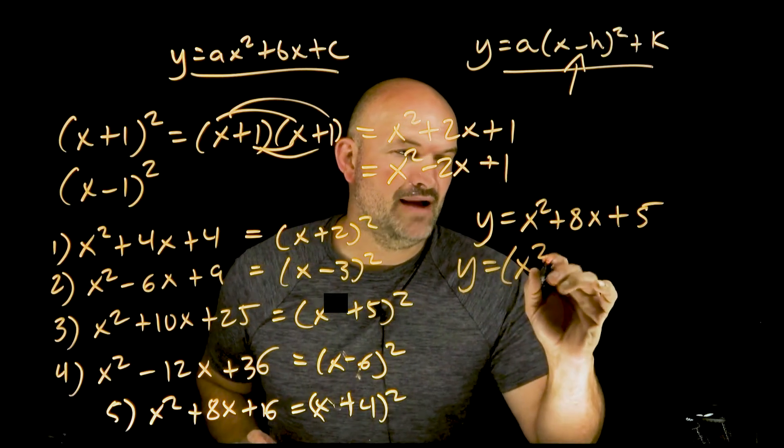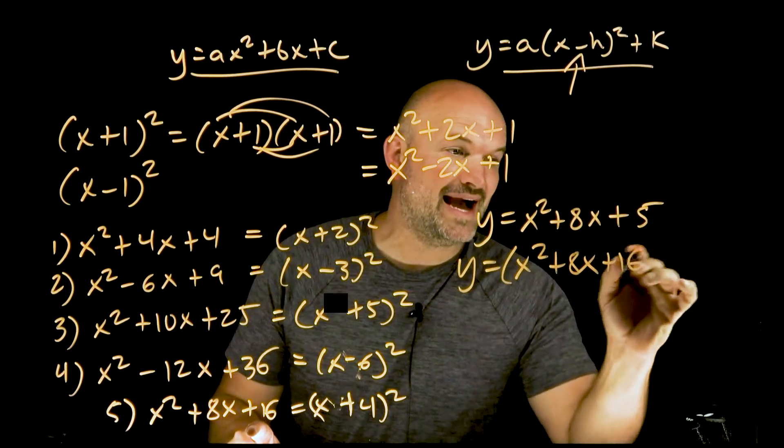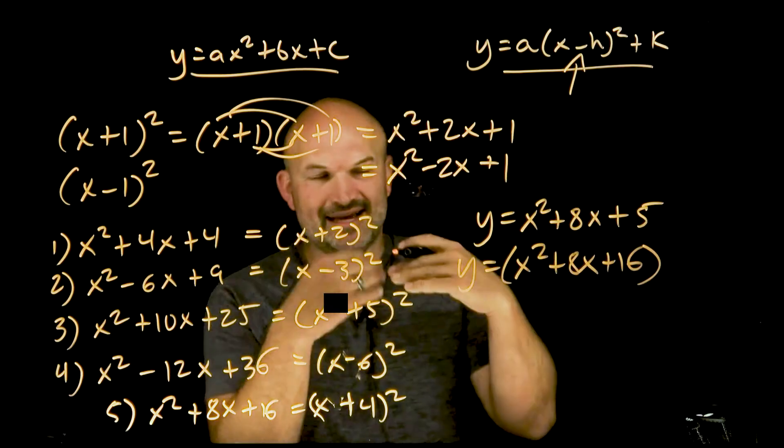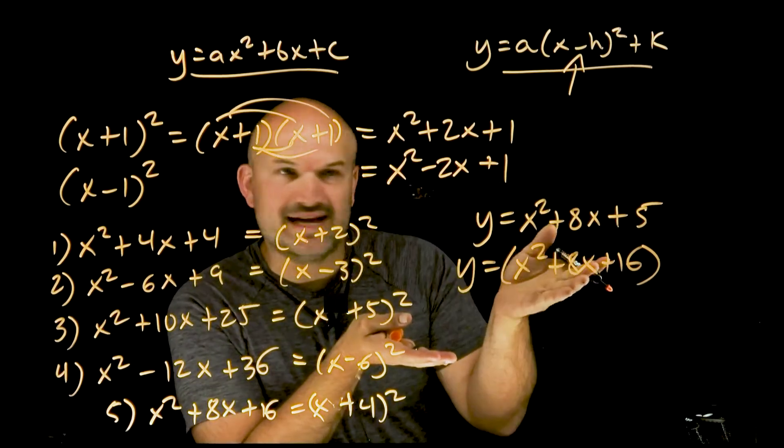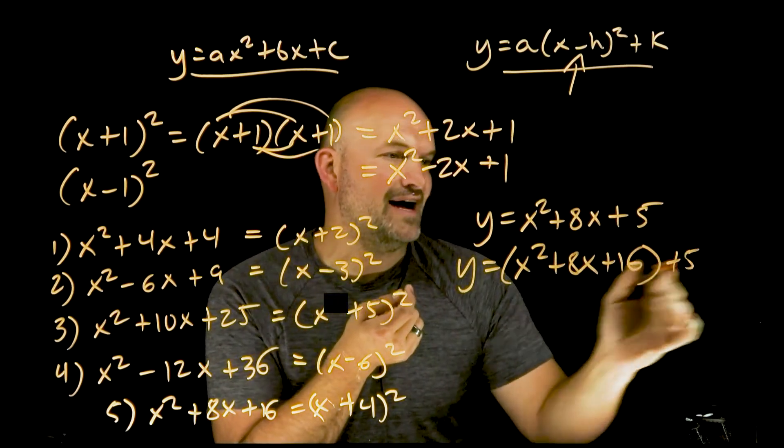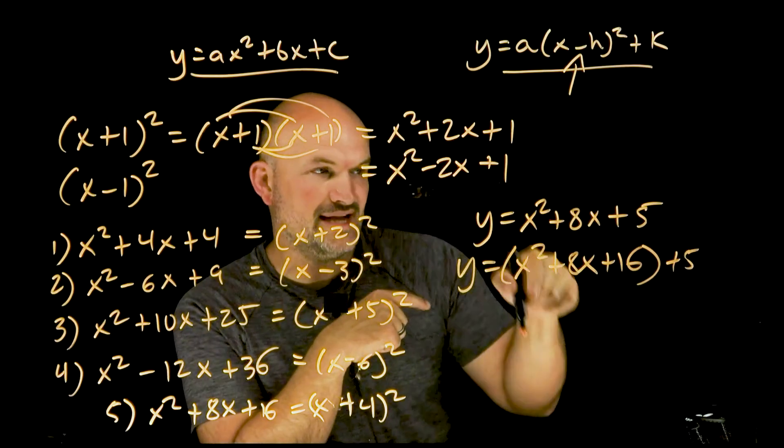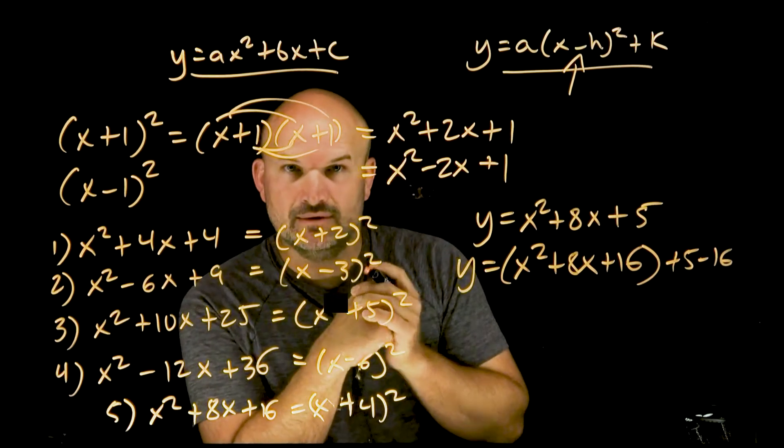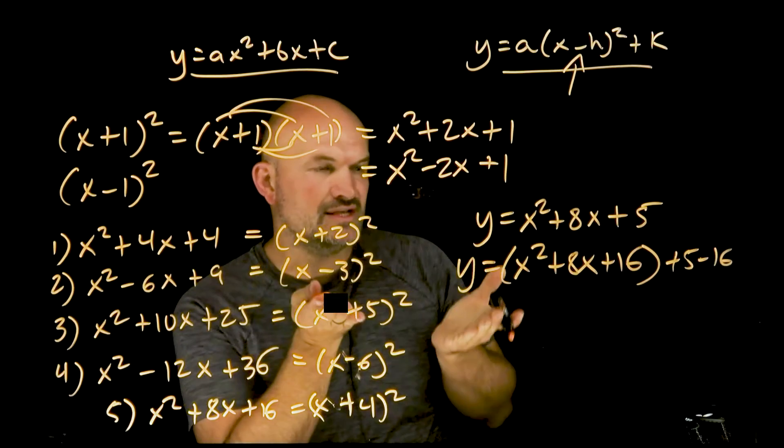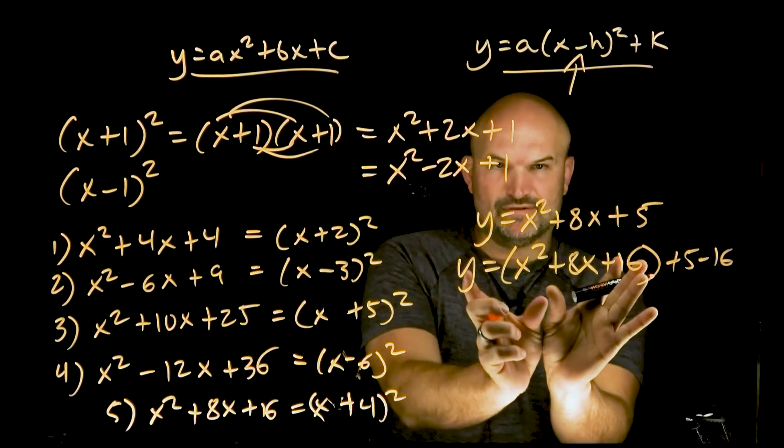So what I'm going to do is I'm just going to say, well, I need that to be a 16. That's the only way I can factor that down. Now, again, you can't just randomly add a number to one side of an equation. So if I have the +5, if I'm going to add the 16 here, technically then I also have to subtract the 16 as well. Again, we always got to keep our equations the same. But what I did is I imposed this perfect square trinomial.